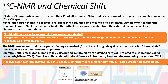All nuclei get shielded from the external magnetic field by the electrons that surround them. If we just had an isolated proton, we'd have our external magnetic field B-naught and the nucleus would feel B-naught directly. However, when we have something surrounded by electron density, we can imagine an electron circulating around the proton, generating its own induced magnetic field in the opposite direction to B-naught. Overall, that proton feels slightly less of the external magnetic field — we say it is shielded.